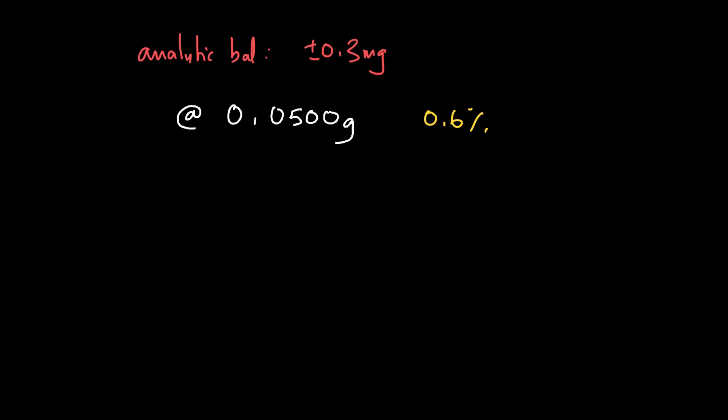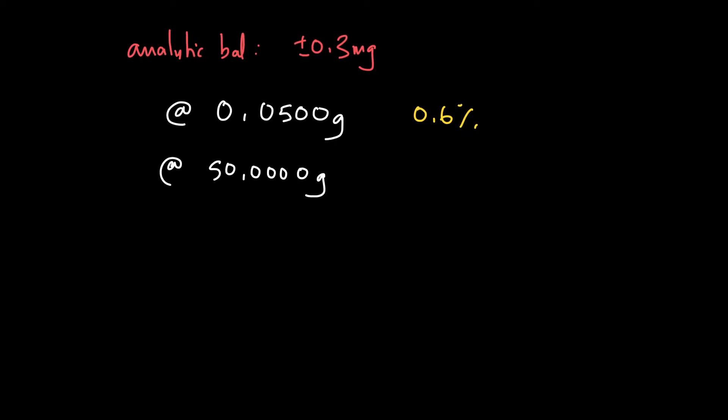Now instead, if you are weighing a 50-gram sample with that absolute uncertainty of 0.3 milligram, that now translates into a percent error of 0.0006%. So notice we have reduced it by a factor of 1,000 by essentially using 1,000 times more of our sample. So even though the absolute uncertainty hasn't changed, we can reduce the relative size of it by using a larger sample. So we can design an experiment and decrease the relative uncertainties by making sure our absolute values are much larger.